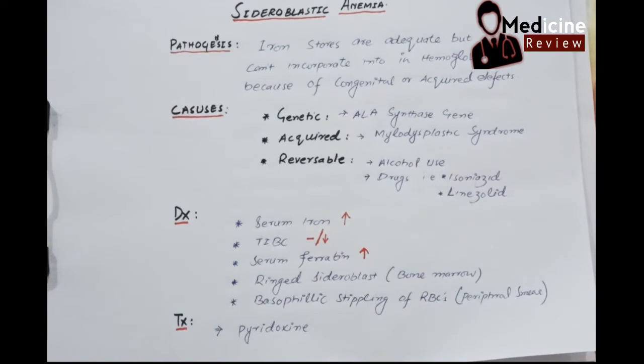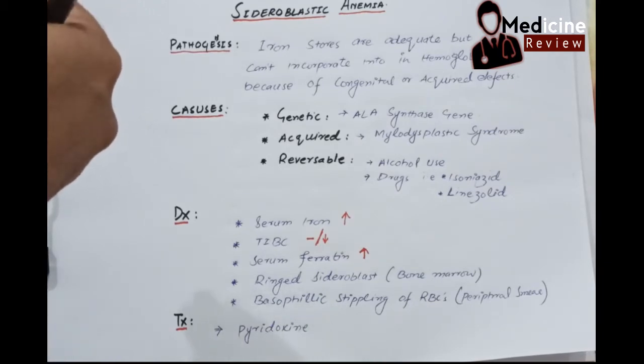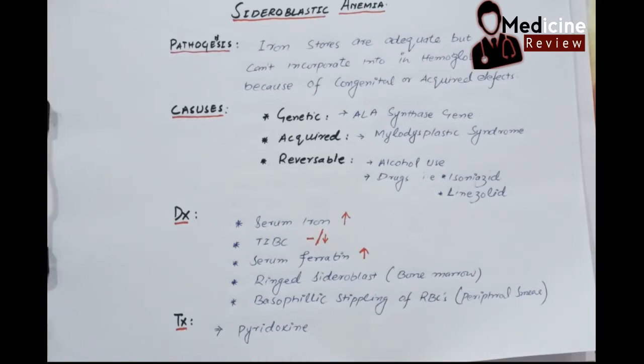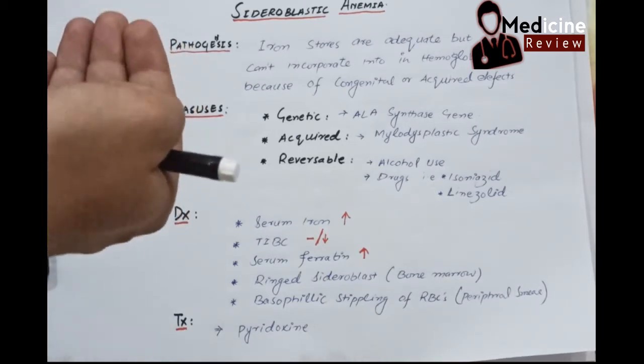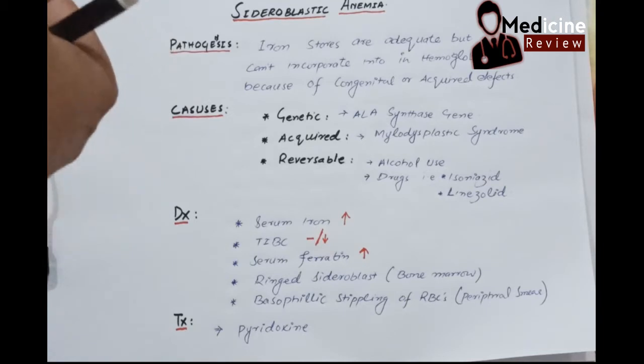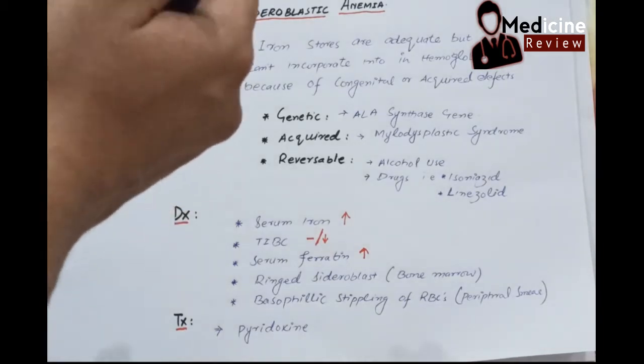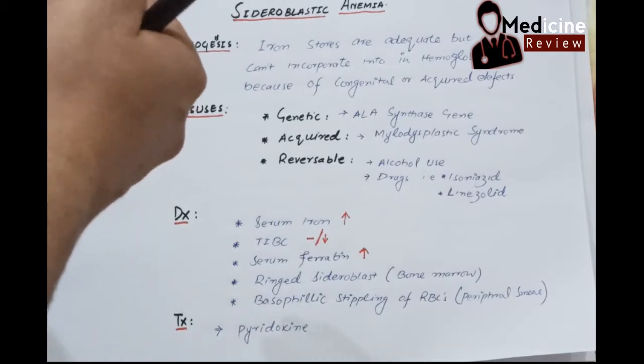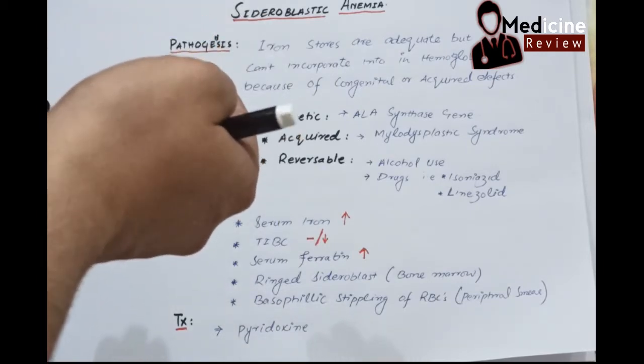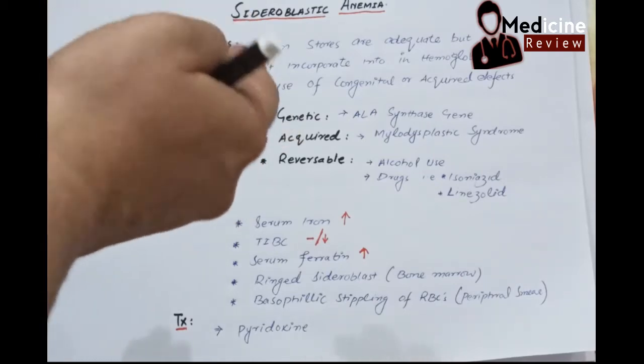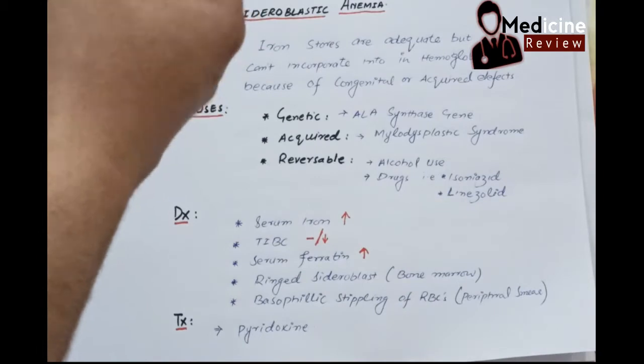In sideroblastic anemia, the iron stores are adequate, but because of some acquired or genetic problems, the iron cannot be incorporated in the hemoglobin. So there will be decreased hemoglobin, which is called anemia. Because of its pathogenesis, it is called sideroblastic.